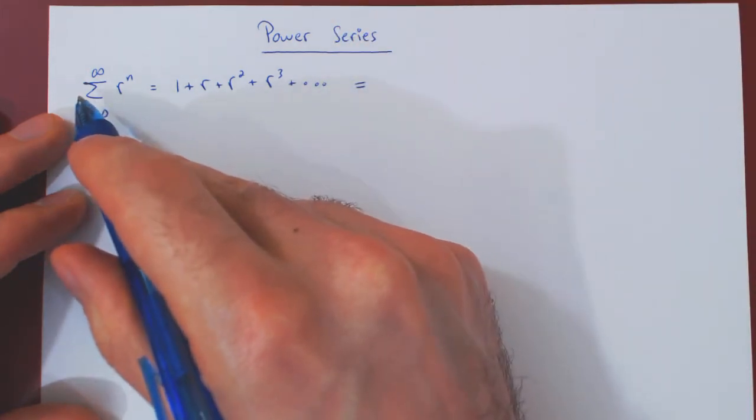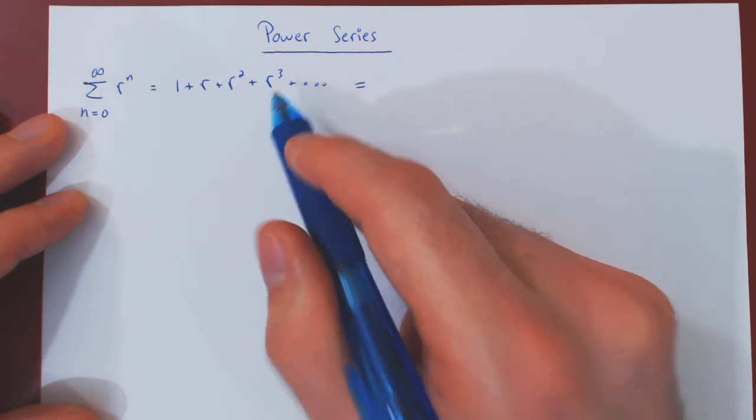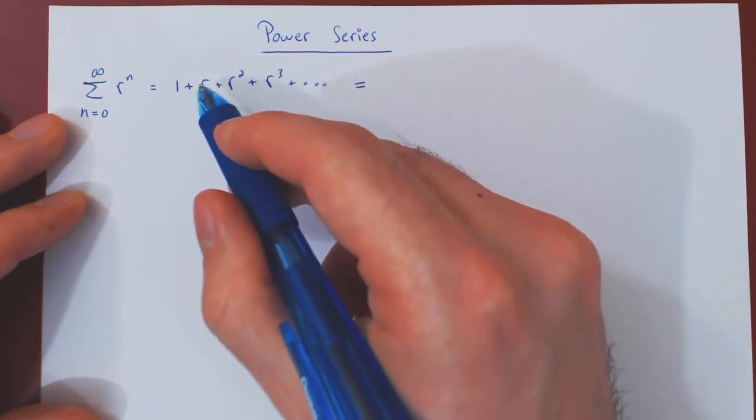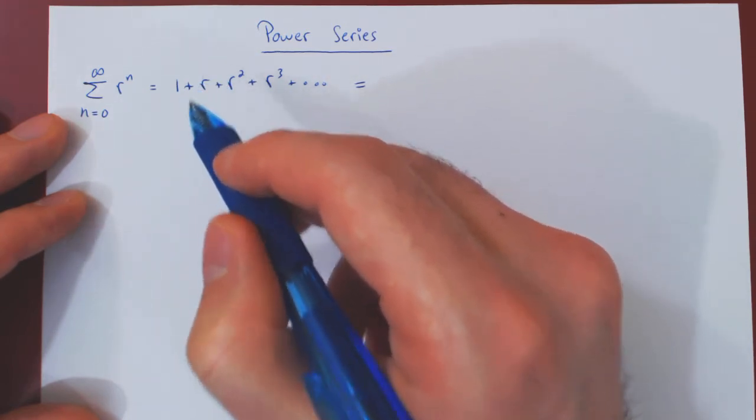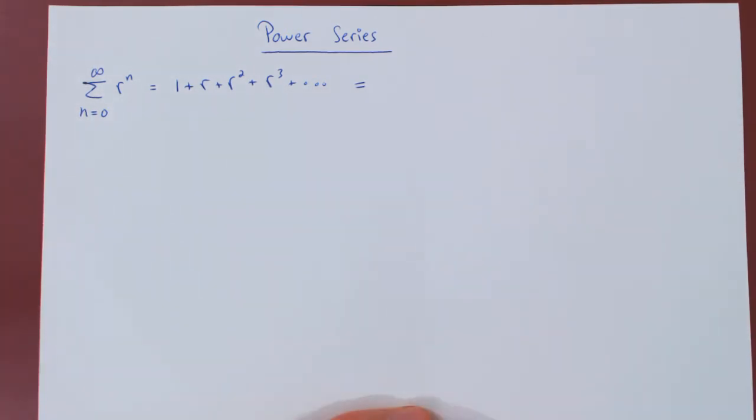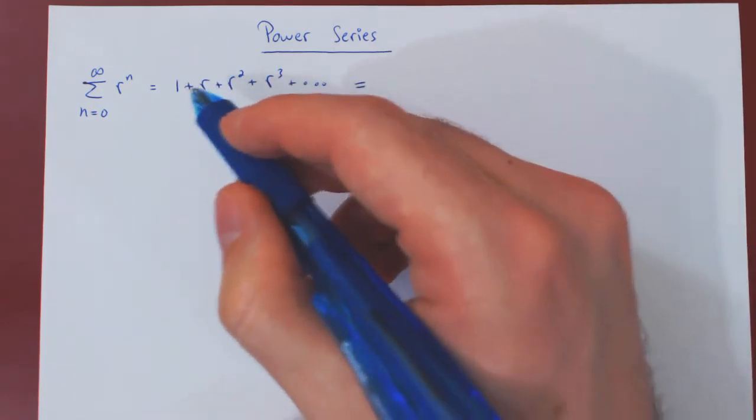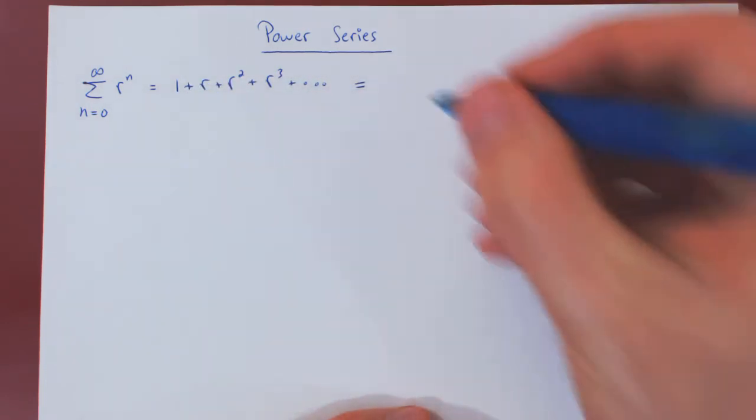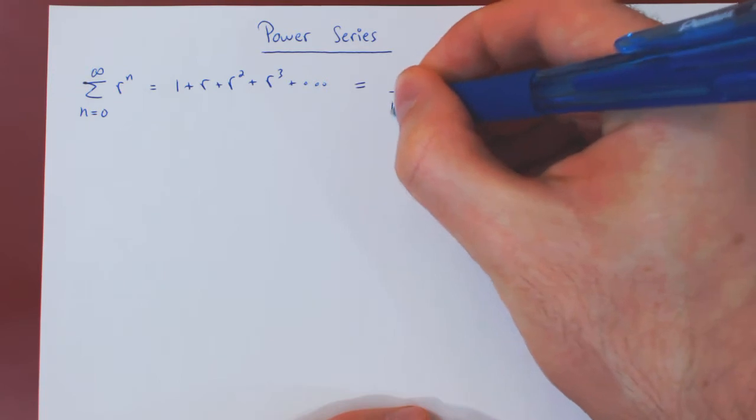And if you recall, this infinite geometric series converges if and only if the absolute value of r is strictly less than 1. And not only can we determine convergence, but we know that this series converges to exactly 1 over 1 minus r.